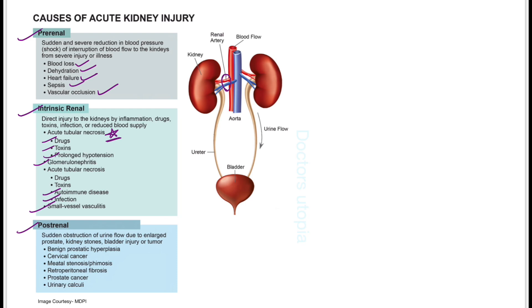The third type is post-renal, which occurs whenever there is obstruction to urine flow. For example, benign prostatic hyperplasia — BPH is the most common cause of post-renal AKI in men. The second cause in men is prostate cancer. Others include cervical cancer, meatal stenosis, phimosis, retroperitoneal fibrosis, and urinary calculi.